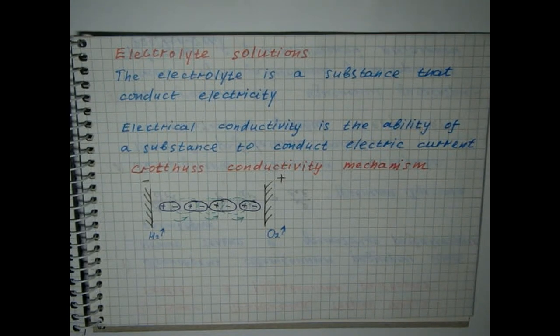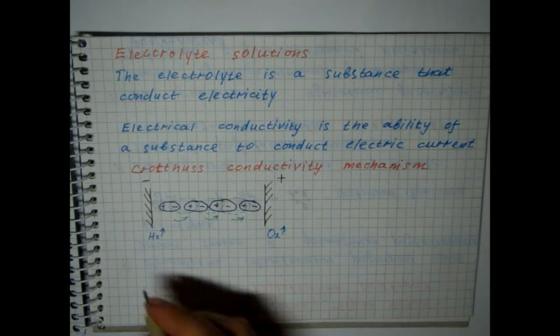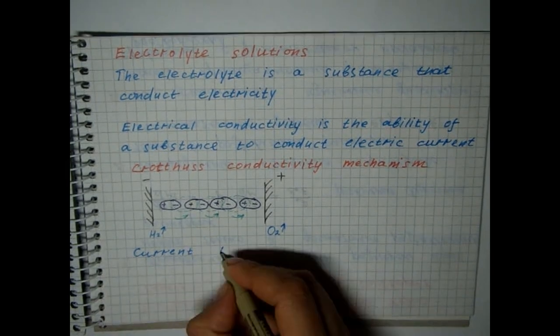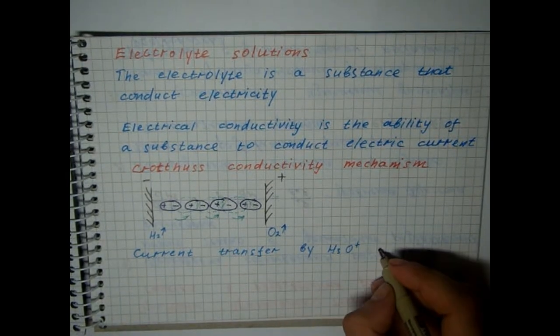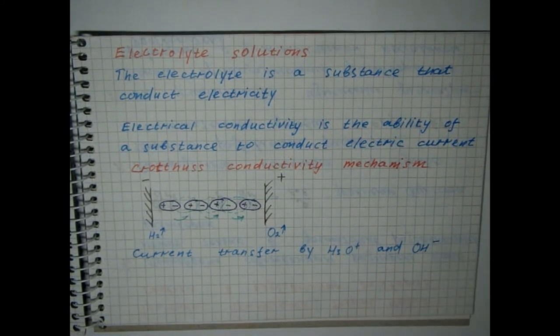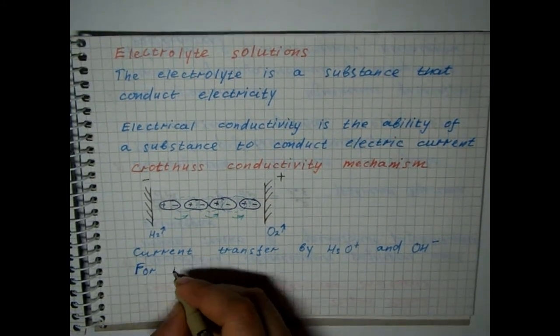Then the number of dipoles is replenished by water molecules. The original chain is restored and the process repeats. This mechanism is very similar to the current transfer mechanism by hydroxonium ions and hydroxyl group. But for most electrolytes it is not applicable.